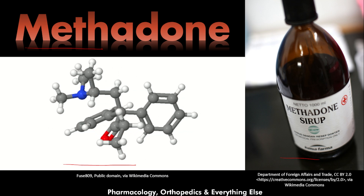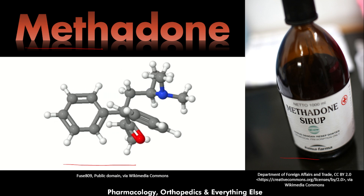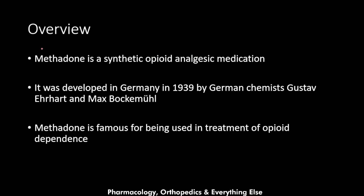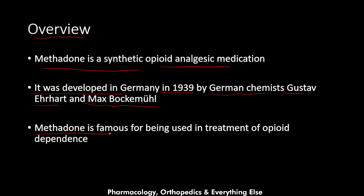You can use the chapters in the video description to skip to other parts of this video. So let's start with an overview of methadone. Methadone is a synthetic opioid analgesic medication. It was developed in Germany in 1939 by the German chemists Gustav Hart and Max Bockman, and methadone is famous for being used in the treatment of opioid dependence.